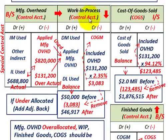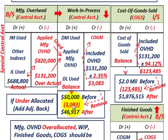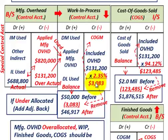For our work in process account, using alternative one's $3,083 adjustment, we credit work in process for that amount. Our beginning balance was $50,000; subtract the $3,083 over-allocated overhead, and we end up with an ending balance of $46,917. Using alternative two, we would subtract $3,040 instead.